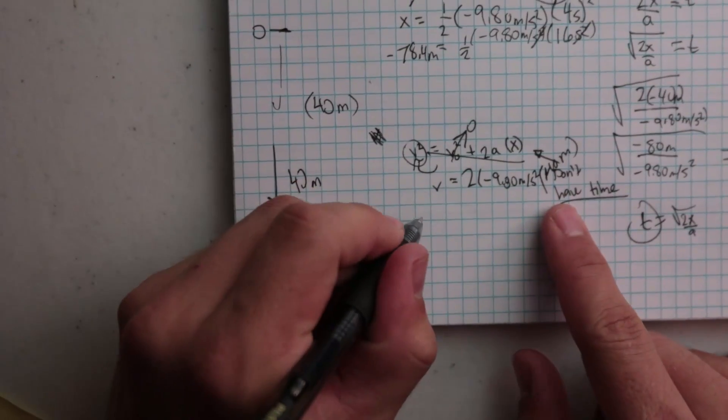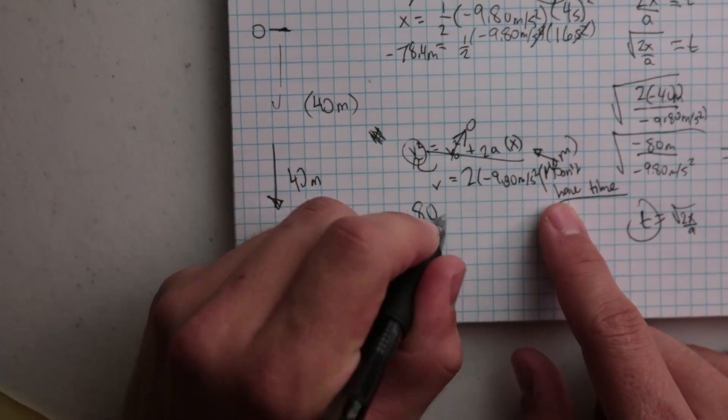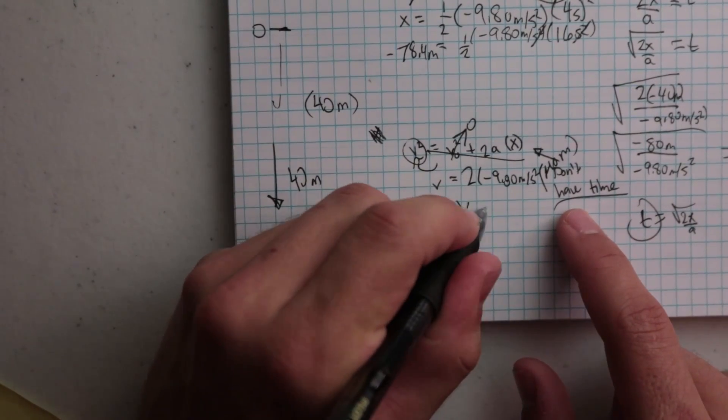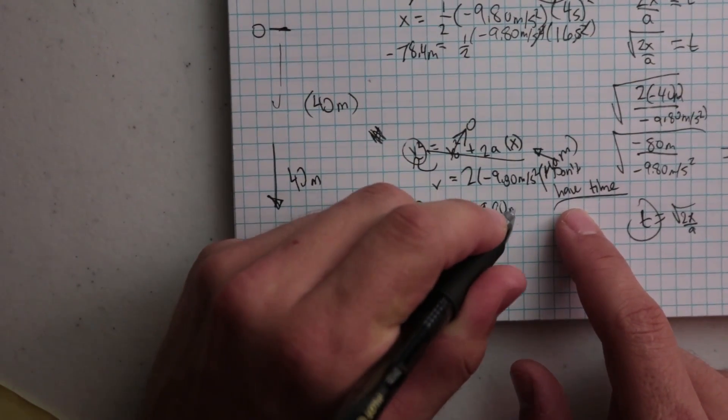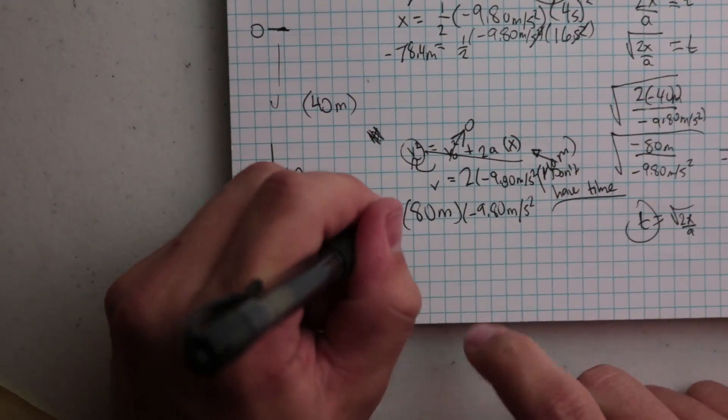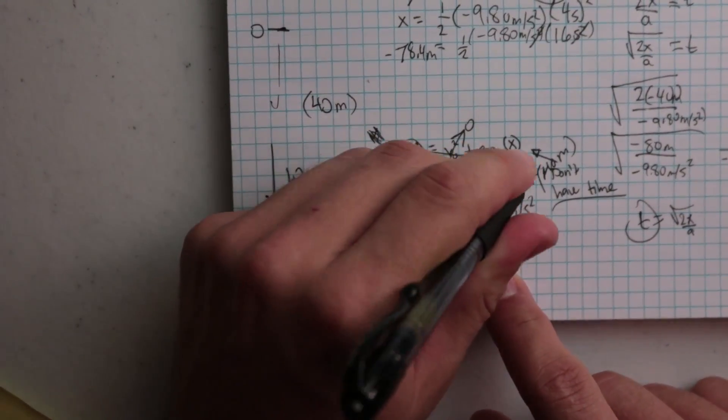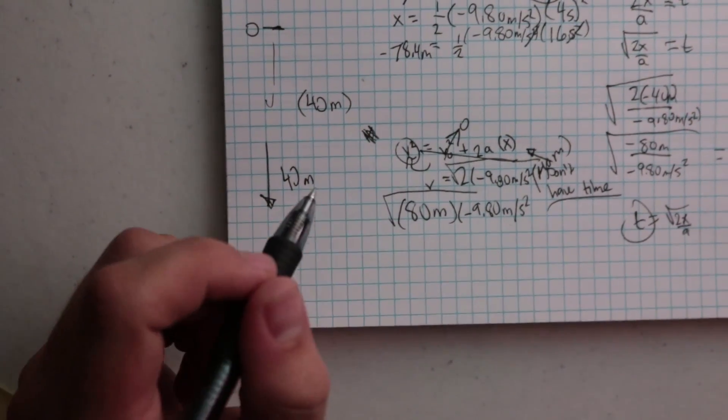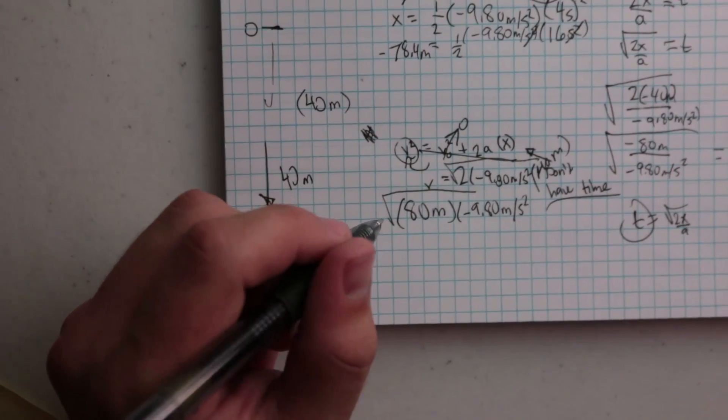So we're going to have 80 meters - that's where there's 2 times 40 - times negative 9.80 meters per second squared. And so we're going to get meters squared over second squared. We're going to take the square root of that, because it's v naught. And so we're going to get meters squared over second squared, which is going to be meters per second when we take the square root.